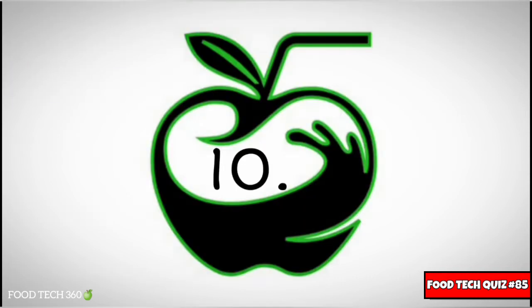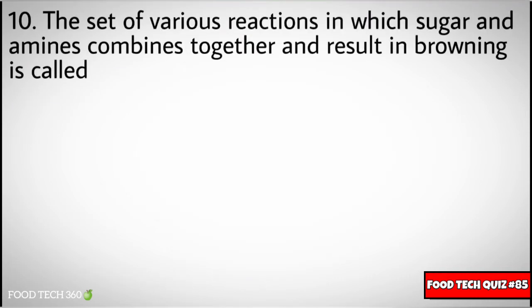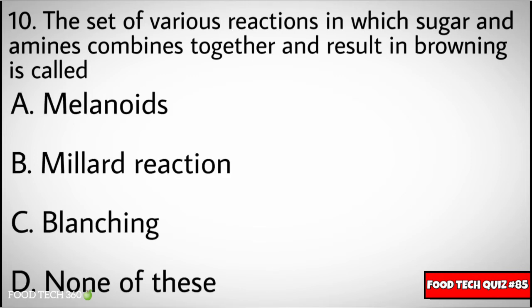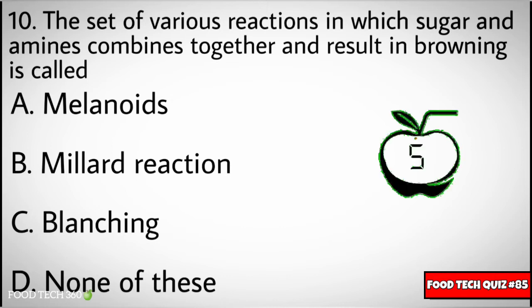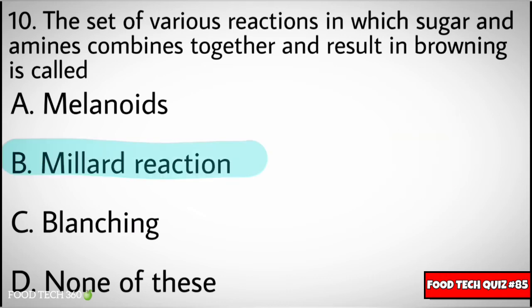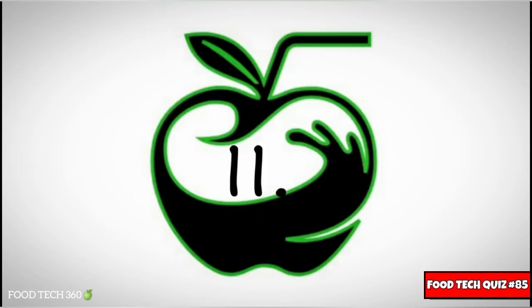Correct answer: A) glycosides. Question number ten: the set of various reactions in which sugar and amines combine together and result in browning is called. Options: A) melanoids, B) Maillard reaction, C) blanching, D) none of these. Correct answer: B) Maillard reaction.